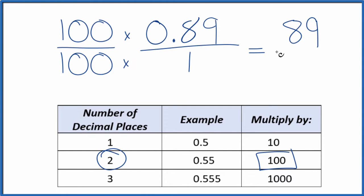So 100 times 1, that is 100. And we have our fraction 89 over 100, which we can't reduce any further. If you divide 89 by 100, you'll get 0.89.